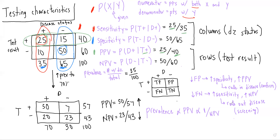Similarly, NPV is the probability of not having disease given you had a negative test result — so it'd be 50 over 60. Both NPV and specificity share a numerator of patients with a negative test result and negative disease, but the denominators differ: specificity looks among patients without disease, and NPV looks among patients with a negative test result.